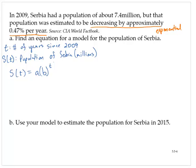Now, the a value is pretty much given. We know that in 2009 Serbia had a population of 7.4 million. So I know that a is 7.4.